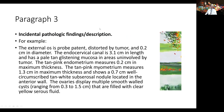Then we come to paragraph three. This is where things are less important, but still need to be mentioned — the incidentals, if you will. The external os is probe patent, distorted by tumor, 0.2 cm in diameter. The endocervical canal is 3.1 cm in length and has a pale tan glistening mucosa in areas uninvolved by tumor. The pale tan-pink endometrium measures 0.2 cm in maximum thickness. The tan-pink myometrium measures 1.3 cm in maximum thickness and shows a 0.7 cm well-circumscribed tan-white subserosal nodule located in the anterior wall. Notice here that we refrain from making the diagnosis of a fibroid — we described it as a nodule, reserving that for the microscopic examination. The ovaries display multiple smooth-walled cysts ranging from 0.3 to 1.5 cm that are filled with clear yellow serous fluid. These are important dimensions, but not critical to the diagnosis.